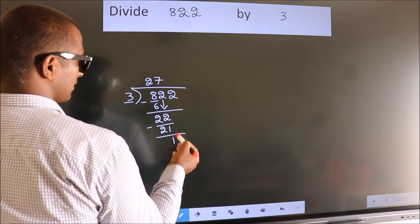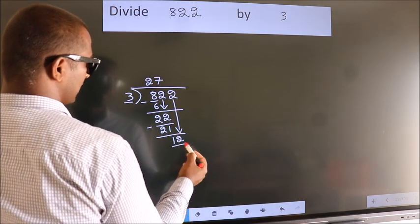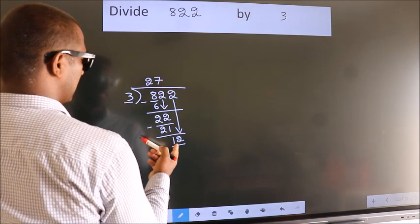After this, bring down the beside number. So, 2 down. So, 12. When do we get 12?